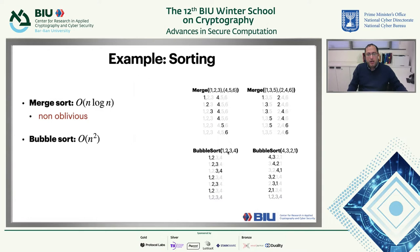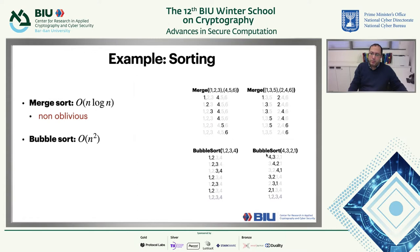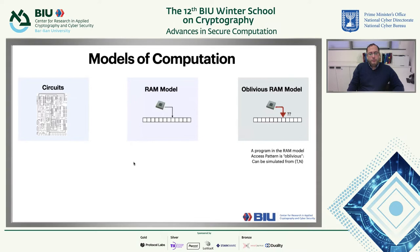With bubble sort on [1,2,3,4], I compare adjacent pairs and leave them the same. With [4,3,2,1], I compare the same positions and swap — but I'm accessing exactly the same locations. So it doesn't matter what the input is; the access pattern of bubble sort is exactly the same. You can simulate the access pattern in advance. So bubble sort is oblivious.